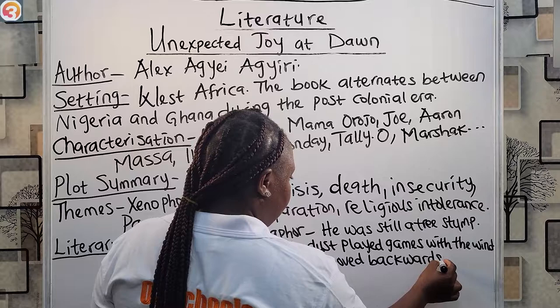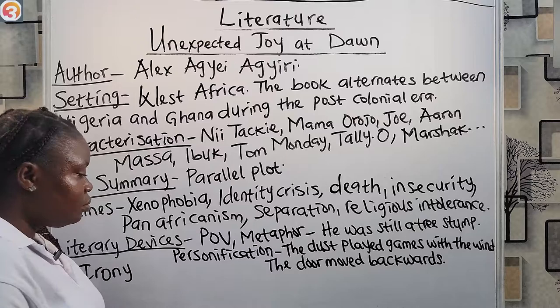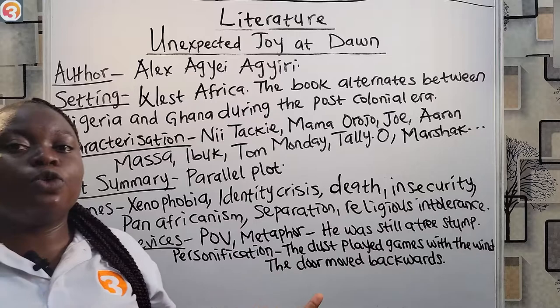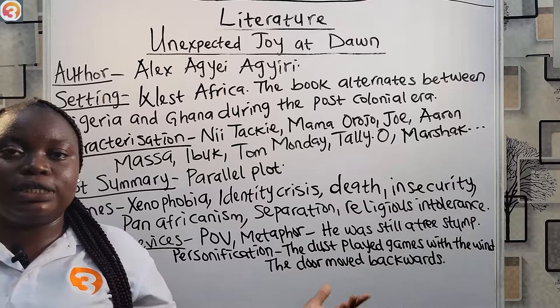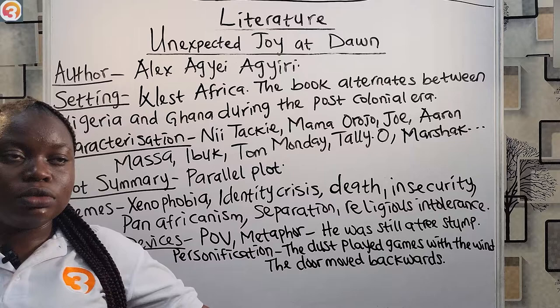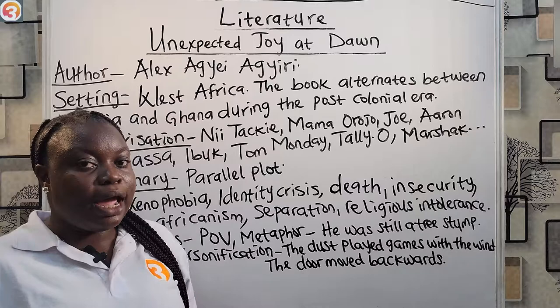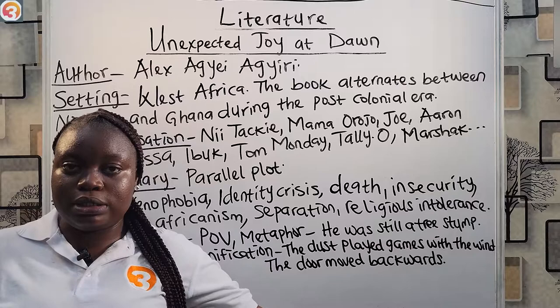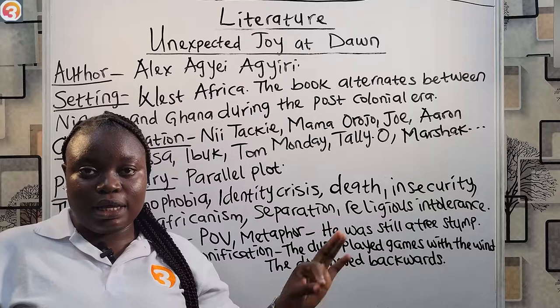Then we have irony, also a literary device used in the book. We see situational irony — that means the opposite of what we expect actually happens. We see it play out in the death of Massa: after holding out and managing her sickness for a while, she dies on the way to the healer. There's also dramatic irony, where the audience is aware of something the characters are not. We see it when Nitaki works in his sister's shop for two days without pay — we the readers know he's working in his sister's shop, but the characters do not.